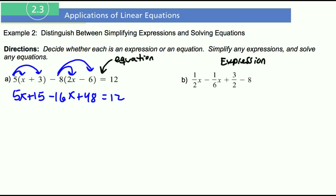All right, so let's combine some common terms here. I know that I can combine my 5x and my negative 16x together since those are common terms. So 5x minus 16x is negative 11x.